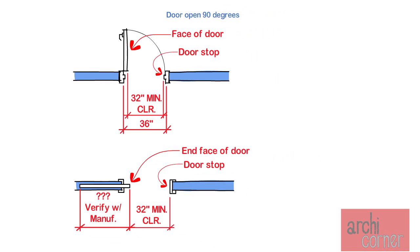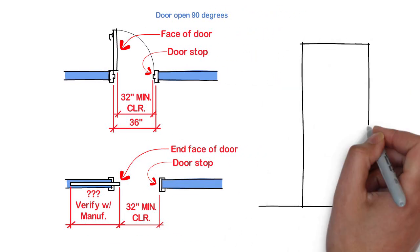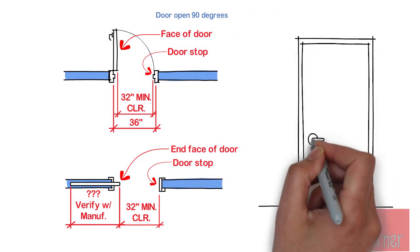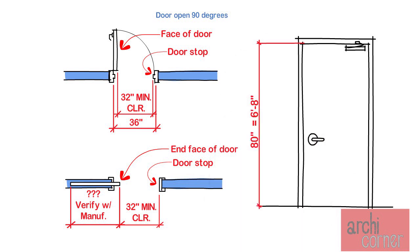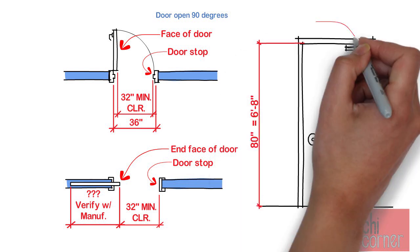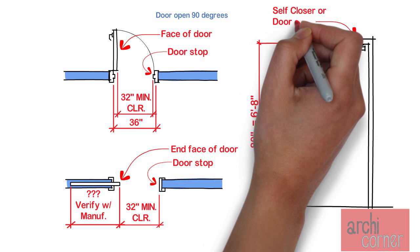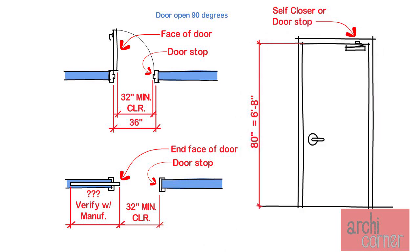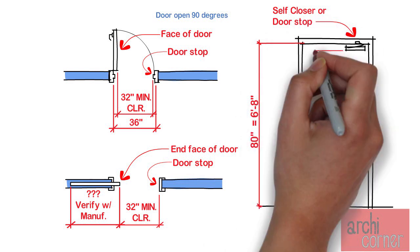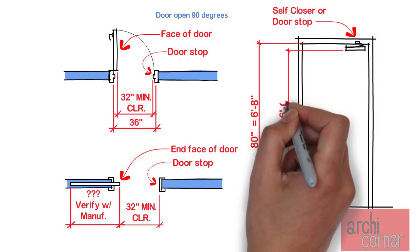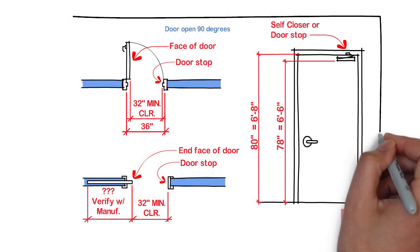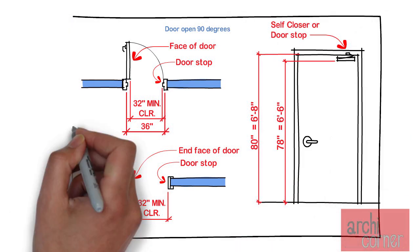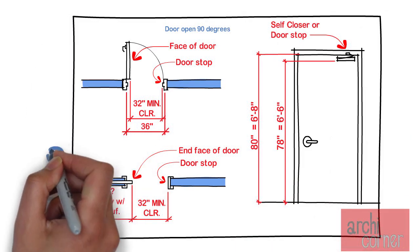Now let's discuss heights. Minimum door height clearances must be 80 inches, which is 6'8". One exception is that door closers and door stops are allowed to be at 78 inches above the finished floor, or 6'6". That pretty much covers your door sizing requirements.